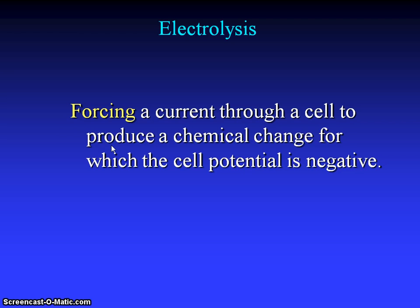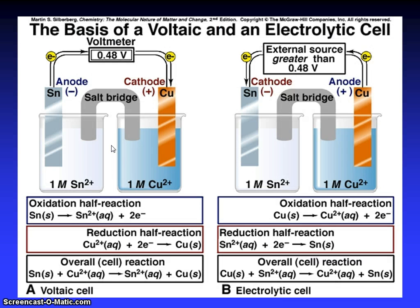What is the meaning of electrolysis? Forcing a current through a cell to produce a chemical change for which the cell potential is negative. The basis of voltaic cell and electrolytic cell. You can see the voltmeter, external source greater than 0.48 volt. Here 1M Sn2+, 1M copper 2+, salt bridge, cathode, anode. Oxidation half-reaction, reduction half-reaction. Overall reactions, voltaic cell and electrolytic cell. See the difference: anode cathode and cathode in voltaic.